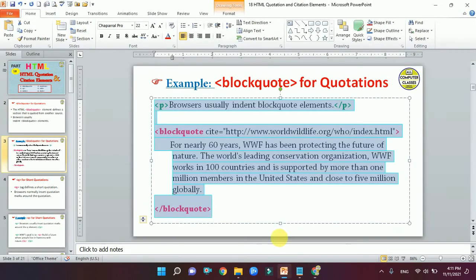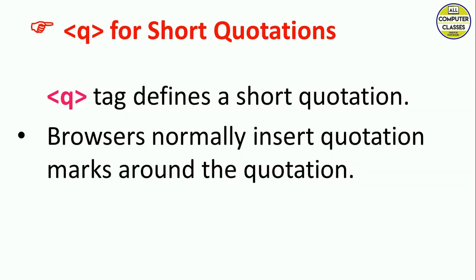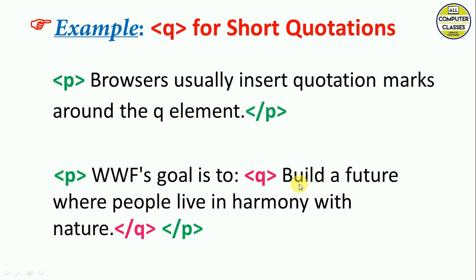The next tag is Q. The Q tag is used for defining a short quotation of a single line. Browsers normally insert quotation marks around the quotation. In the example, simple text is in the paragraph tag, then the Q tag opens, a line is written, and then Q tag closes — that's how we write it.